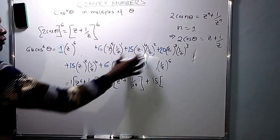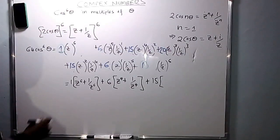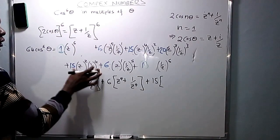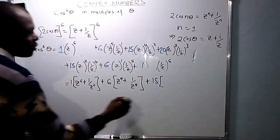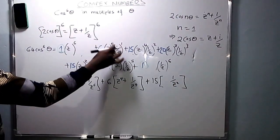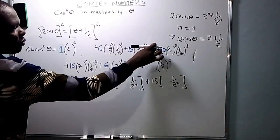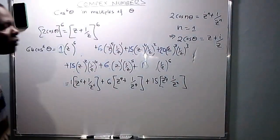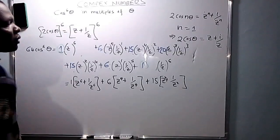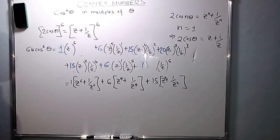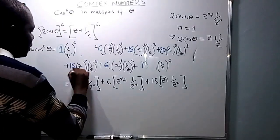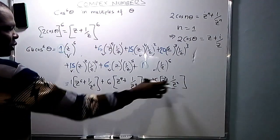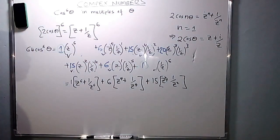For coefficient 15: z to power 2 times 1 over z to power 4 gives 1 over z squared, and z to power 4 times 1 over z to power 2 gives z squared. So you simplify to get z squared plus 1 over z squared, factoring out the coefficient of 15 times (z squared plus 1 over z squared).